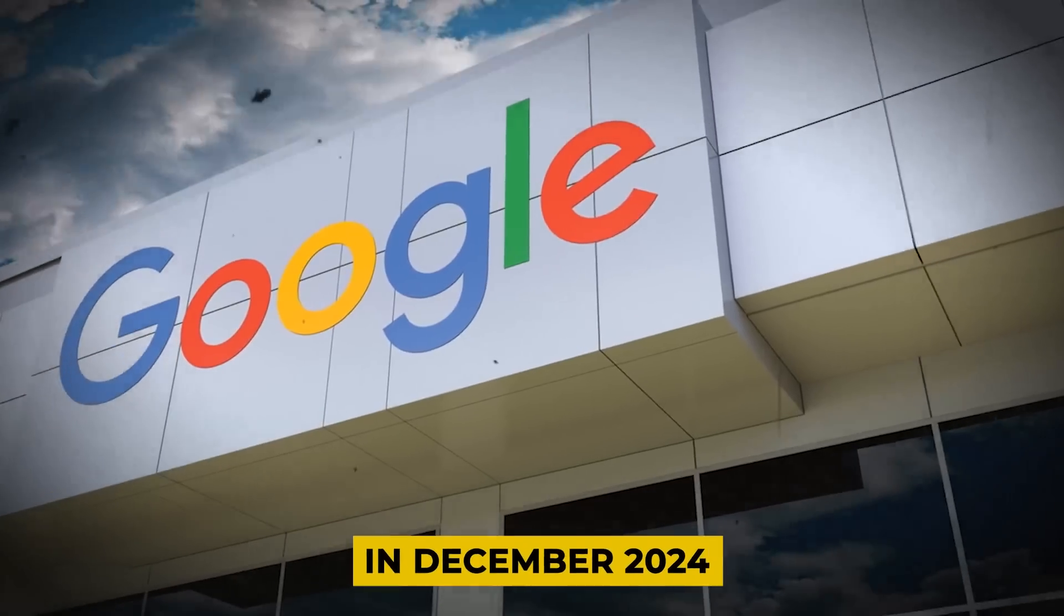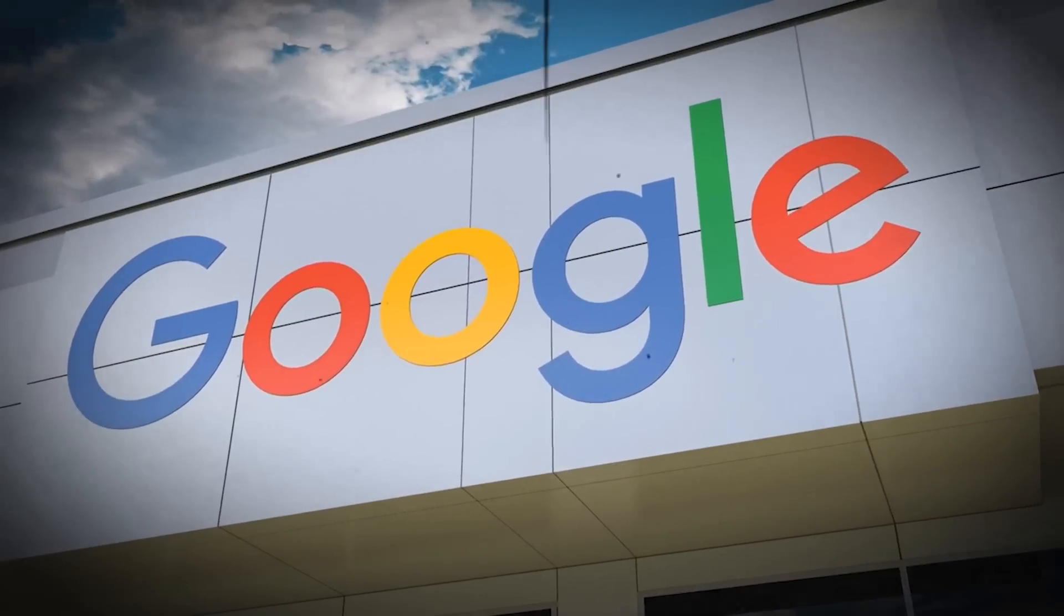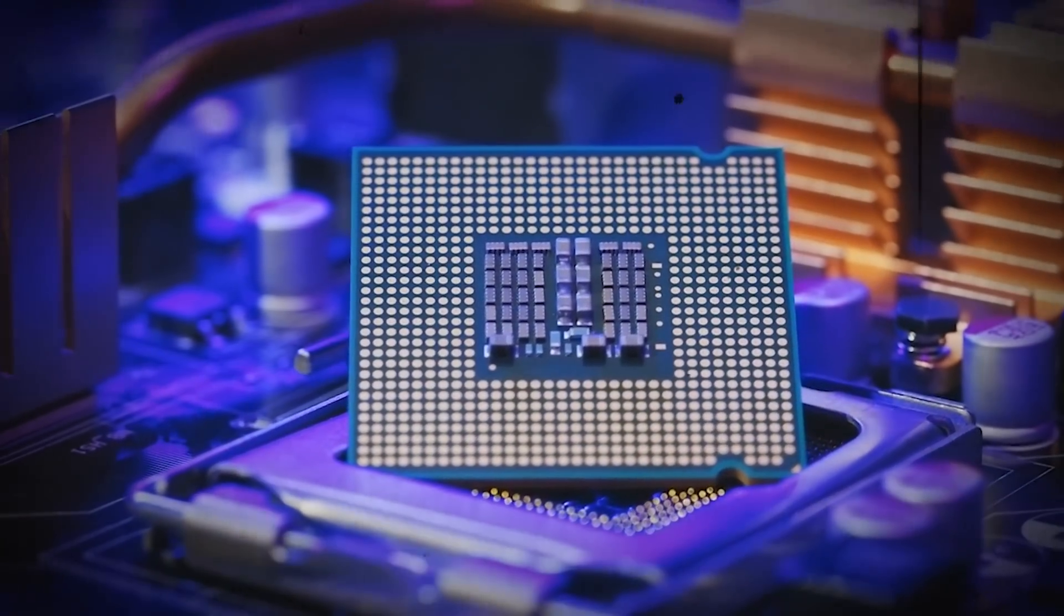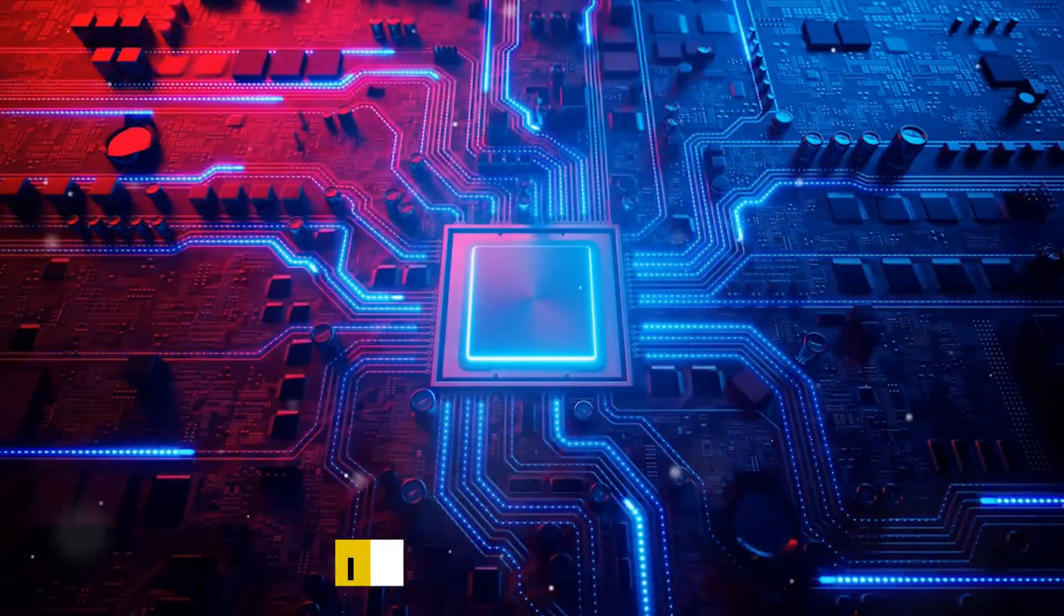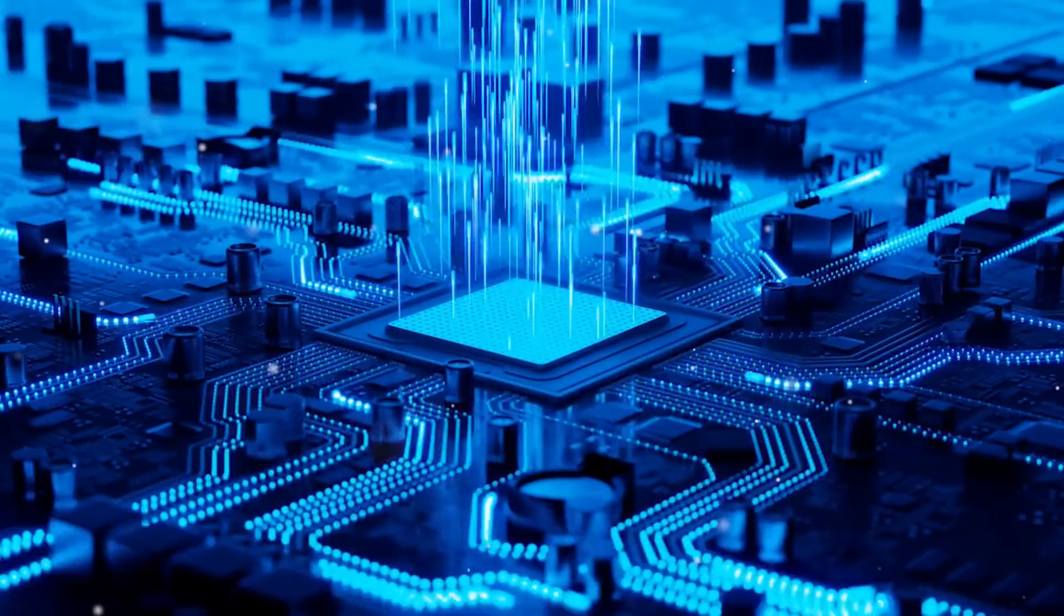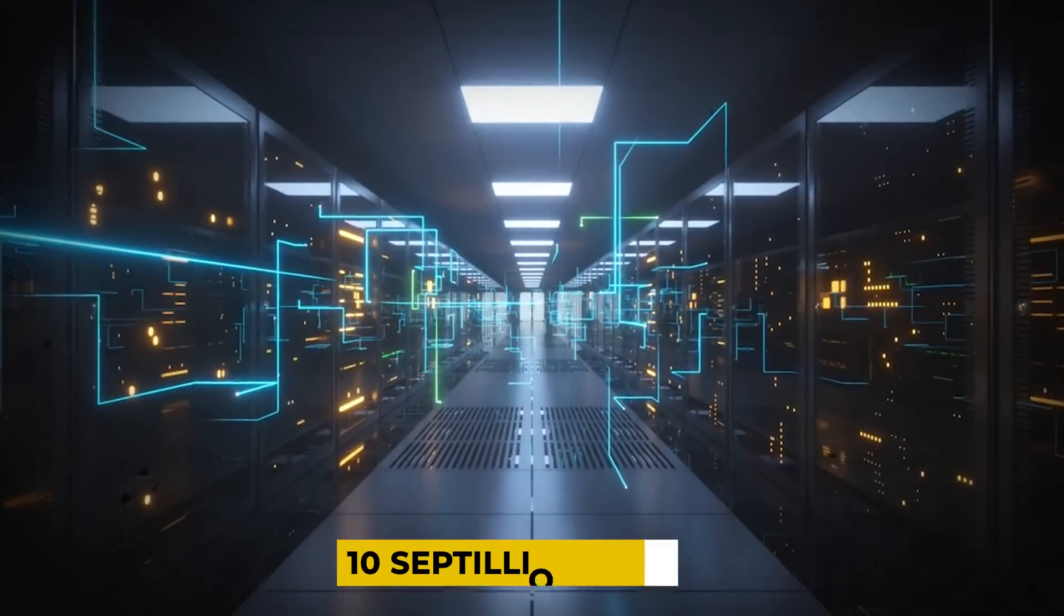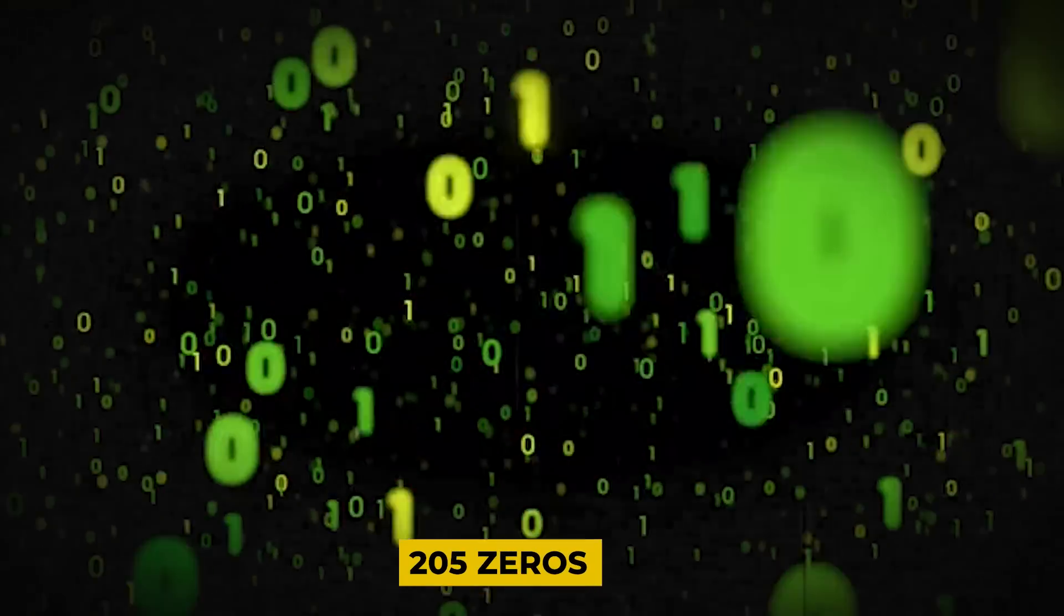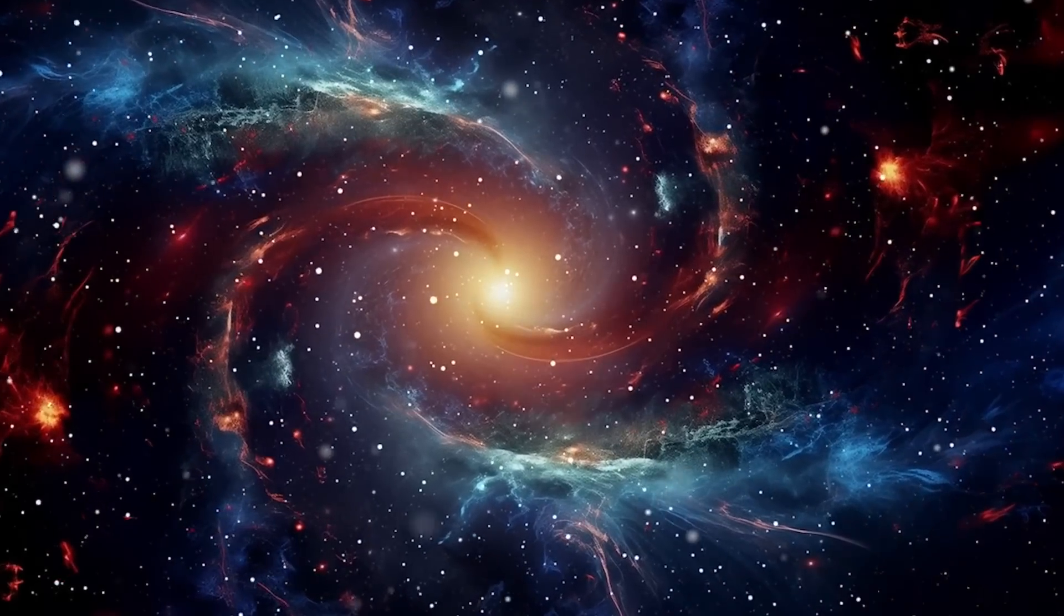In December 2024, Google quietly dropped a bombshell in the tech world. They called it Willow, a sleek 105-qubit quantum processor that did something wild. It solved a complex random circuit sampling task in under five minutes. The same task would take a classical supercomputer around 10 septillion years to figure out. That's a one with 25 zeros, far beyond the age of the universe itself.